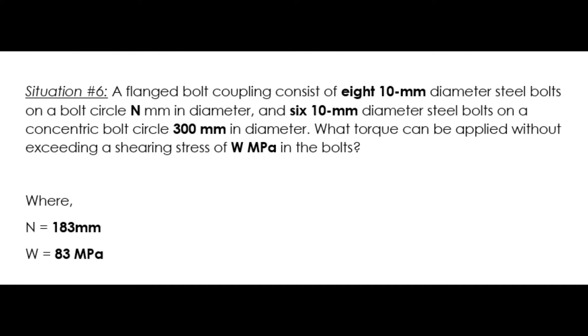Based from our previous quiz, situation number 6: a flanged bolt coupling consists of 8 ten-mm diameter steel bolts on a bolt circle N mm in diameter and 6 ten-mm diameter steel bolts on a concentric bolt circle 300 mm diameter. What torque can be applied without exceeding a shearing stress of W MPa in a bolt where N equals 183 mm and W equals 83 MPa?